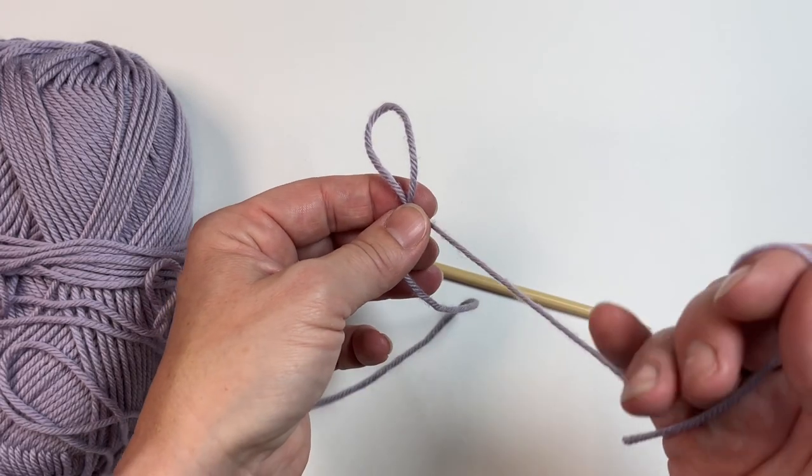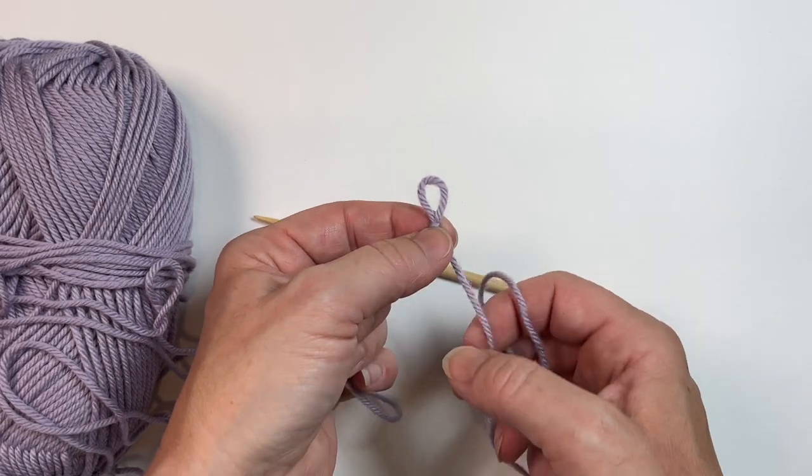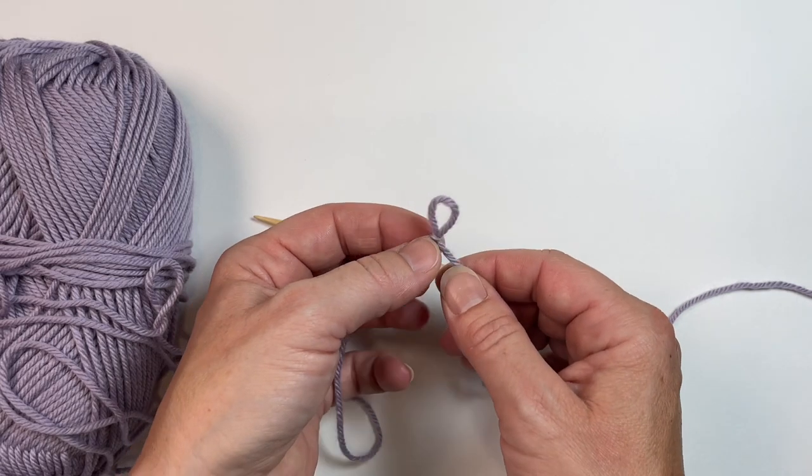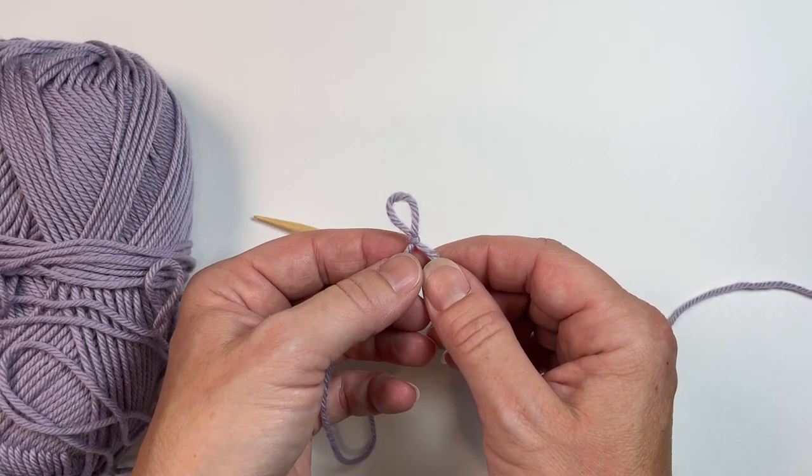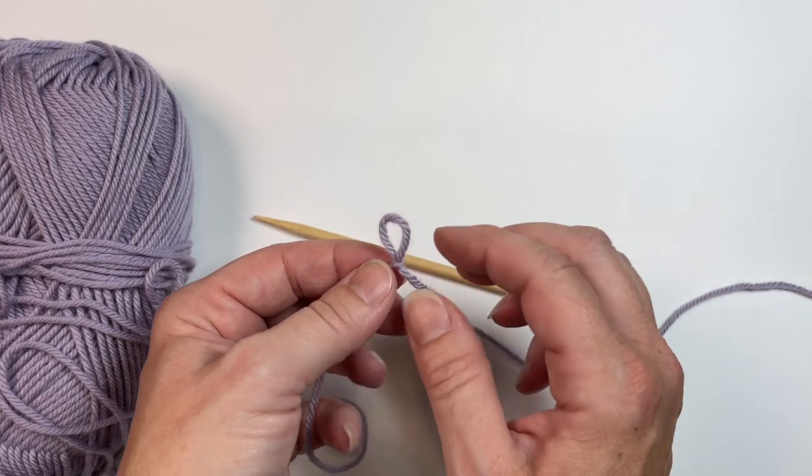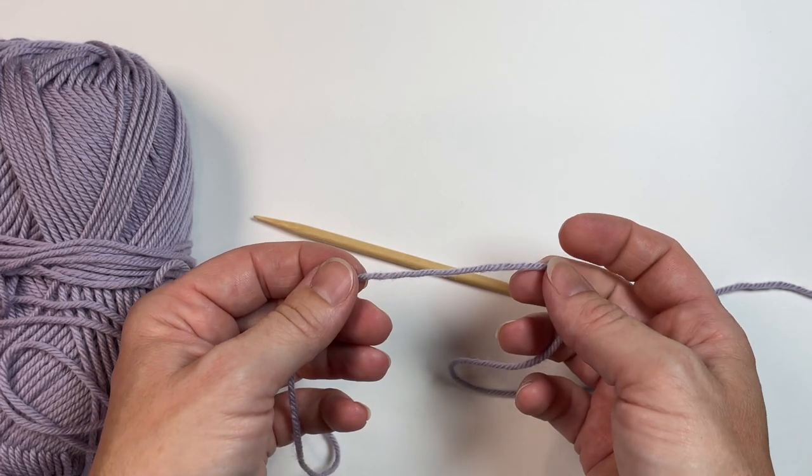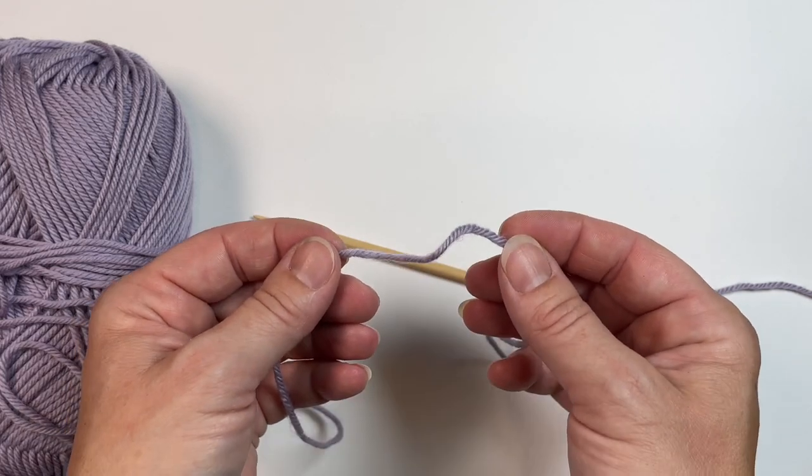I like making my slip knot this way because it gives me my tail to pull this tight. Sometimes that comes in handy, sometimes it doesn't. But I'm actually going to show you the way that I like to start my long tail cast on. It is not with a slip knot. There's nothing wrong with a slip knot; I just have found that often I like my tension a little better when I do it this way.